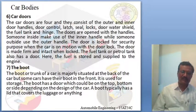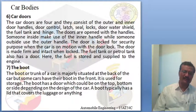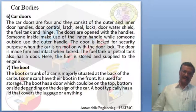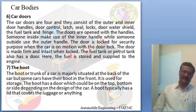Car doors allow passengers to easily enter and exit the vehicle, and sensitive goods can also be loaded through them. Car doors have four components including outer and inner door handles, door control latch, seal locks, door water shielding, fuel tank hinge. Doors are opened with handles from inside or outside. When the car is in motion, the door lock secures the door in a locked form. The fuel tank door is separate from the engine.